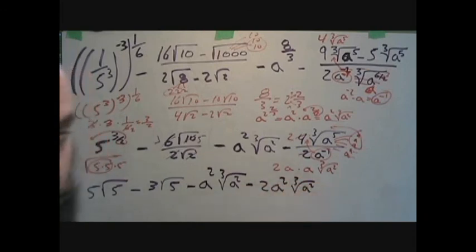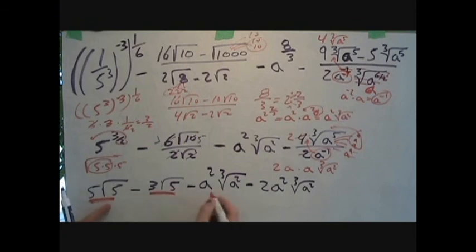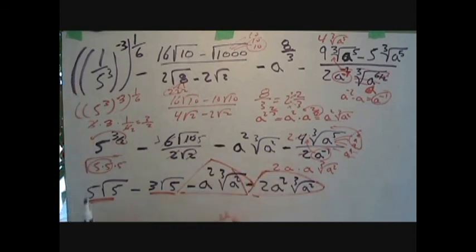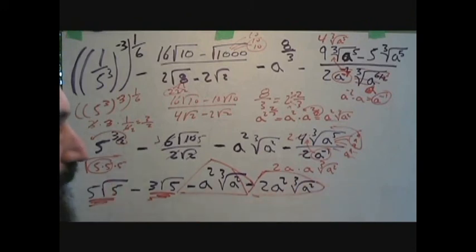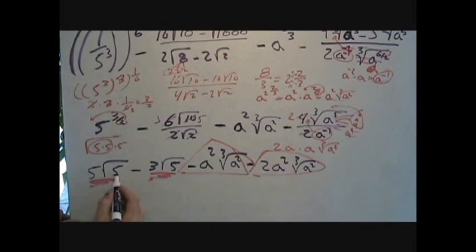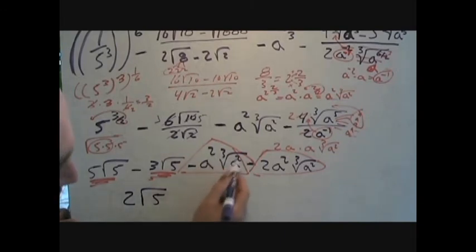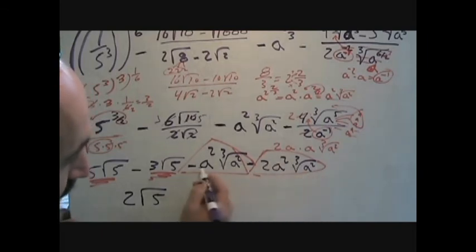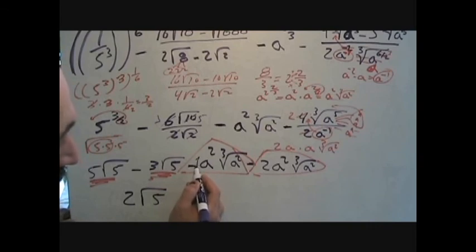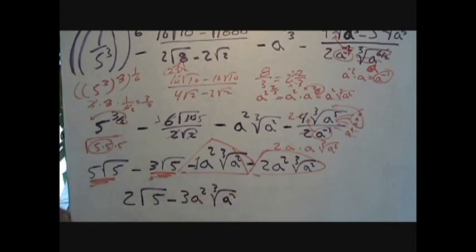Now we can combine like terms. The square root of 5 terms combine: 5√5 minus 3√5 equals 2√5. For the cube root of a squared terms: negative a squared times the cube root of a squared minus 2a squared times the cube root of a squared — if there's no number in front it means 1, so negative 1 minus 2 is negative 3 — giving negative 3a squared times the cube root of a squared. That is our final solution.